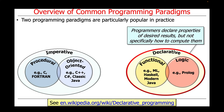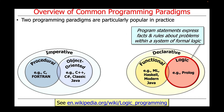There's also the declarative paradigm, which is a model where programmers declare properties of desired results, but don't specifically indicate how to program them. One category of languages within the declarative paradigm are logic programming languages, where program statements express facts and rules about problems within a system of formal logic. An example of a logic programming language is Prolog.